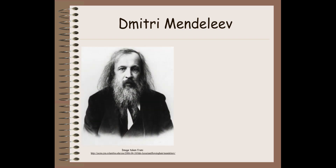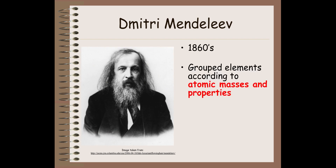Let's talk about the periodic table. The first name you should know is Dmitry Mendeleev. He was a Russian scientist active in the 1860s, and he grouped the elements according to atomic masses and properties. He organized and grouped elements according to their properties and ordered his table according to atomic masses. Today, the periodic table is ordered by atomic number, but he ordered it by atomic mass.